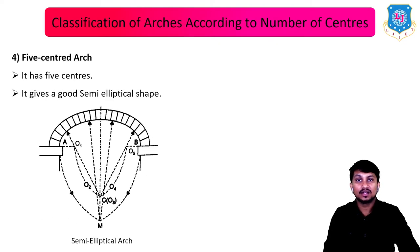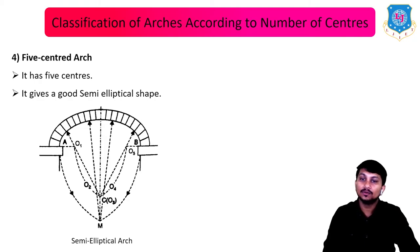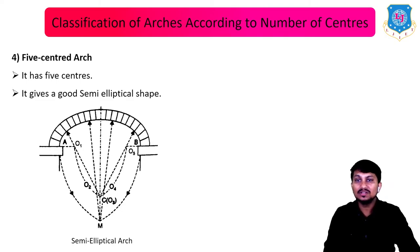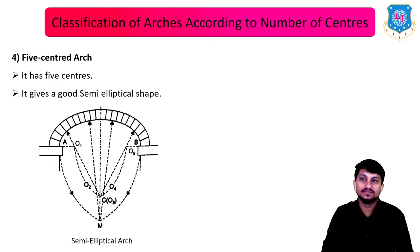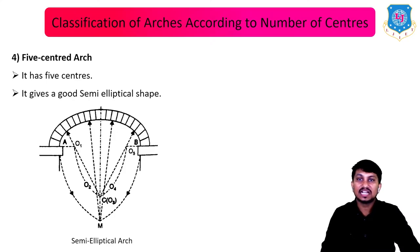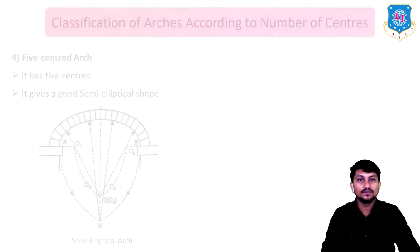The last type according to number of centers is the five-centered arch. It has five centers: O1, O2, O3, O4, and O5. It gives a good semi-elliptical shape — the semi-elliptical arch is the best example of a five-centered arch. This concludes the classification of arches according to number of centers.